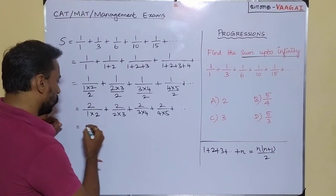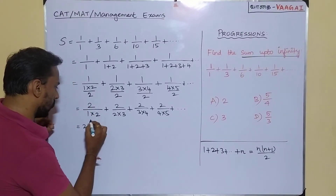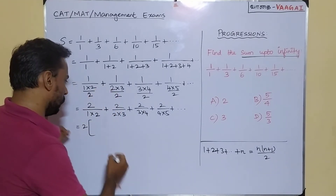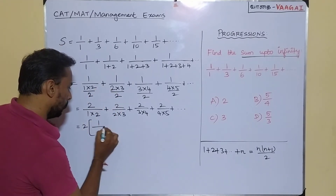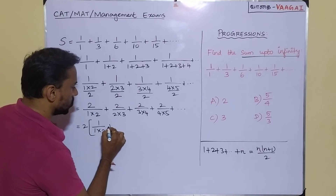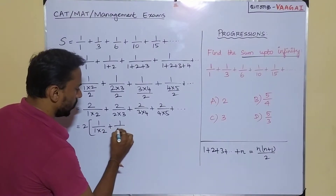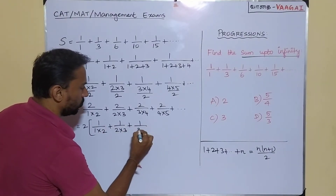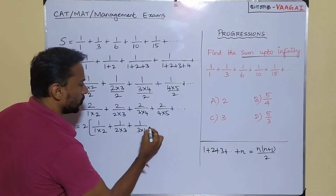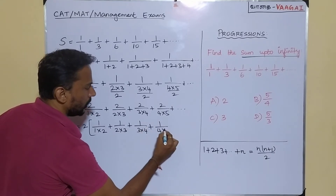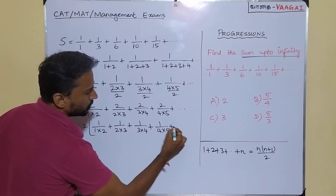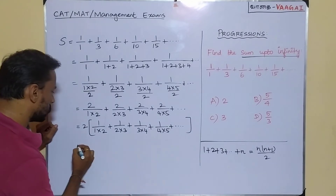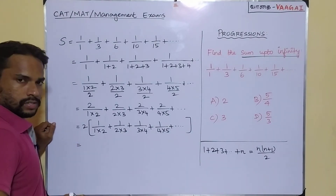Factoring out 2 as a common factor, we get: 2 × [1/(1×2) + 1/(2×3) + 1/(3×4) + 1/(4×5) + and so on].